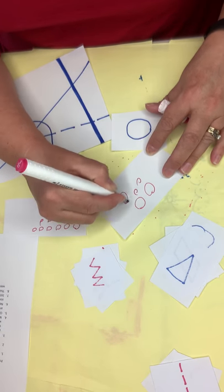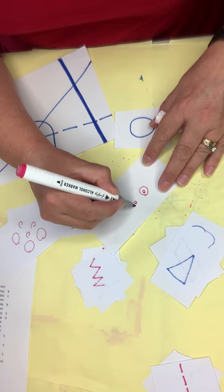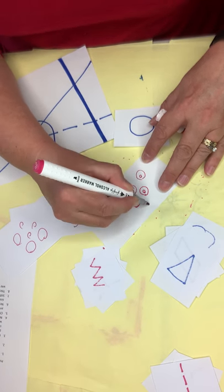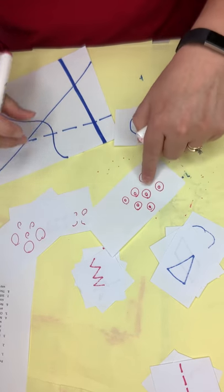So on another piece of paper I'll show you. It could just be circles in a row. It could be scattered circles in different sizes. Big, little, big, little, big, little. It could be circles inside of each other.